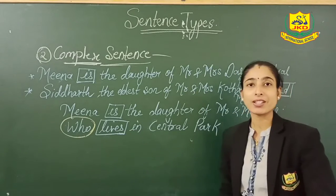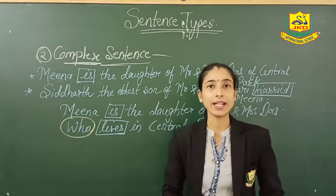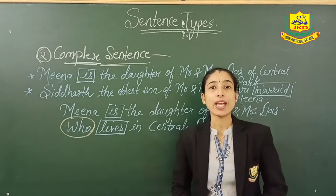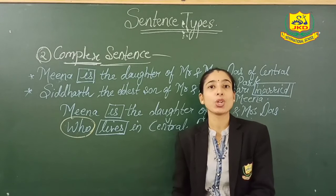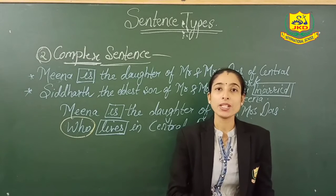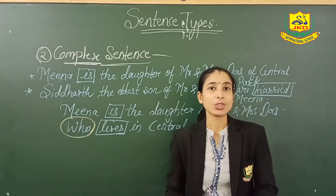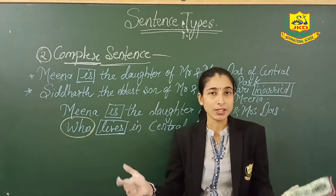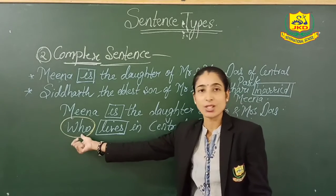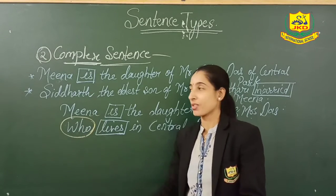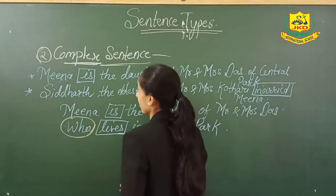So what does complex sentence mean? Complex sentence means those sentences which have a principal and independent clause combined with a dependent clause, and where both the clauses are joined by using subordinating conjunctions.